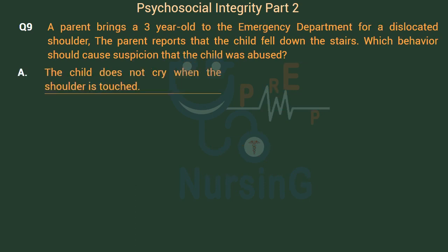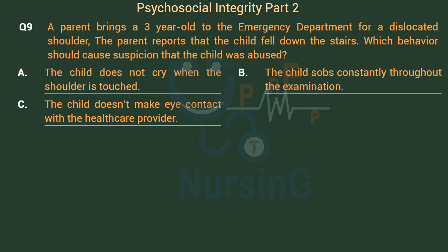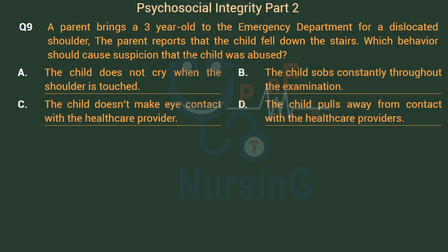Option A: The child does not cry when the shoulder is touched. Option B: The child sobs constantly throughout the examination. Option C: The child doesn't make eye contact with the healthcare provider. Option D: The child pulls away from contact with the healthcare providers.